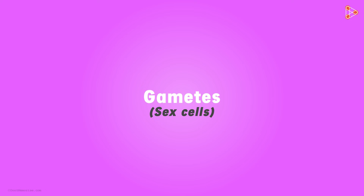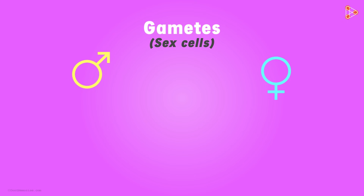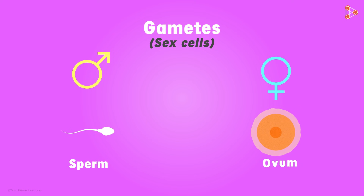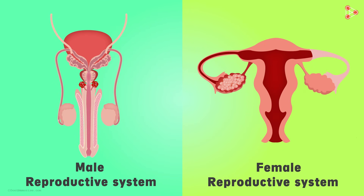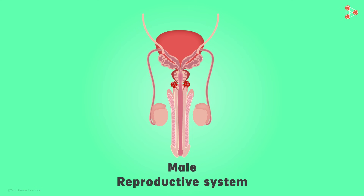In order to learn sexual reproduction, we need to understand the gametes first. Gametes are sex cells and are different in both males and females. The male gamete is called sperm while the female gamete is called ovum. In order to study them, we first need to take a glance at the reproductive systems. This will give us an idea of how the gametes are produced and help us understand the fertilization process better.